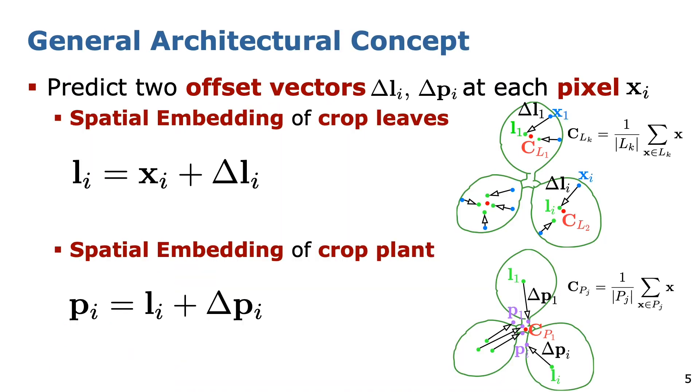To perform the two-fold instance segmentation, we design a convolutional neural network which predicts two sets of offset vectors to shift pixel coordinates associated to an instance towards a region around the corresponding instance center. We denote translated pixel coordinates as spatial embeddings. The first set translates each pixel coordinate associated with a leaf instance towards its corresponding center, resulting in spatial embeddings Li as shown in the top-right figure.